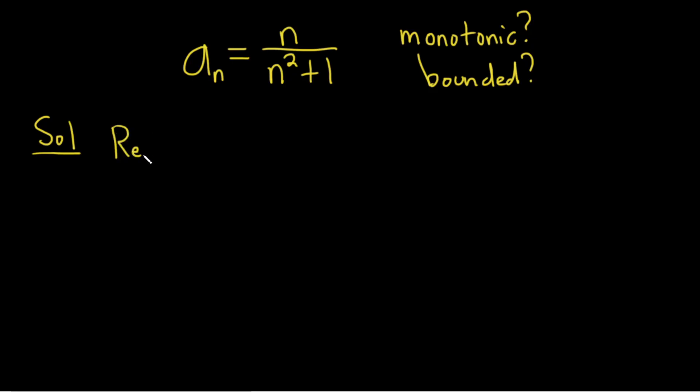So recall the definition of bounded. Recall that a sequence a sub n is said to be bounded if there exists, so the backwards E means there exists, a number M such that the absolute value of a sub n is less than or equal to M, and this is for all integers little n. I'm being really pedantic here. I figured why not take this opportunity to show you the way to do this with the definition of what it means for a sequence to be bounded.